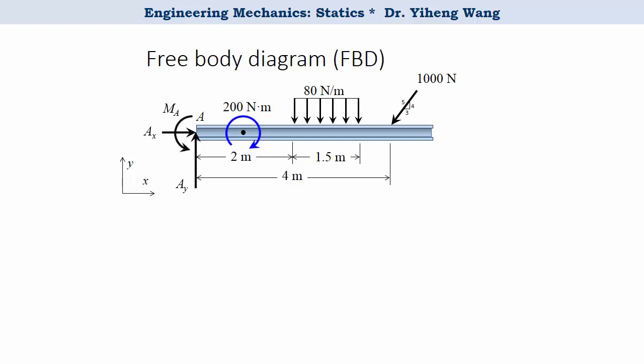Since this is a 2D problem, all motions can only occur within the x-y plane, therefore there cannot be any other type of motion, and the wall will not provide any other type of support reactions. Now the free body diagram is complete, and we have exactly three unknowns: Ax, Ay, and Ma. Therefore we can write the three equilibrium equations to solve for all of them.